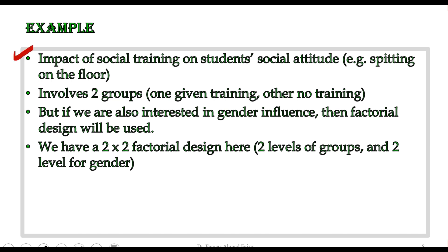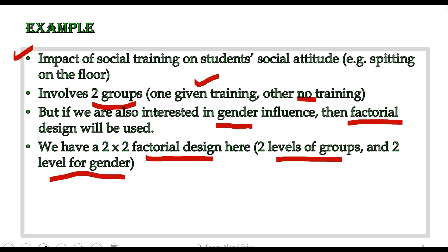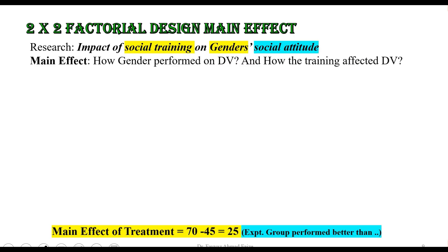Let us do another example. The research topic is the impact of social training on student social attitude. Because of the experimental design we involve two groups: an experimental group receiving social training and a control group with no training. We introduce gender as a second independent variable. This creates a factorial design examining how social training and gender together affect social attitude.